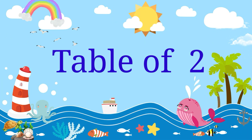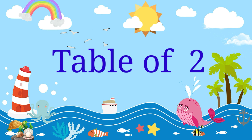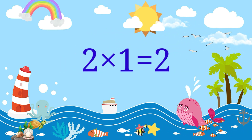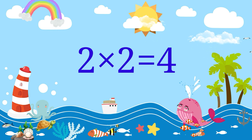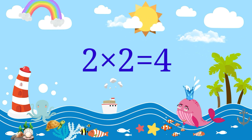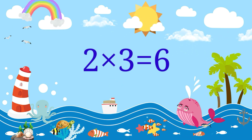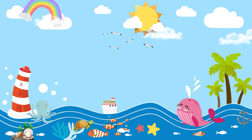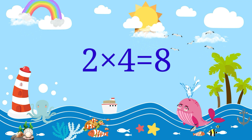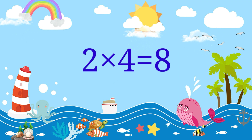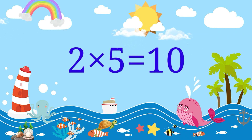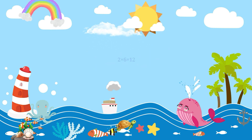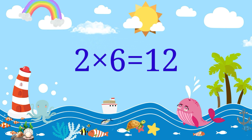Table of 2. 2 1's are 2. 2 2's are 4. 2 3's are 6. 2 4's are 8. 2 5's are 10. 2 6's are 12.